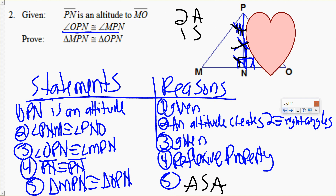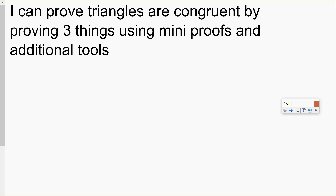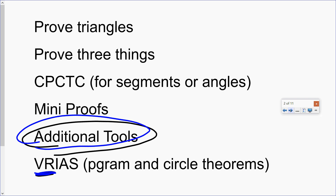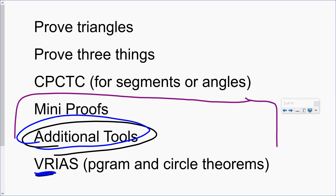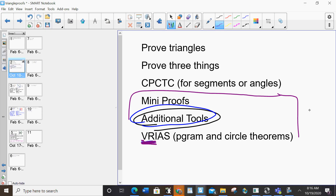So to prove triangles are congruent, I'm always proving three pairs of things congruent. To do that, I do mini proofs with my givens, I use my definitions, then I move on to my additional tools. V and R are the only ones we talked about so far — vertical angles and reflexive property. Your classwork and homework is to finish triangle proofs, and then we're going to move on to CPCTC next class.